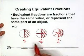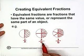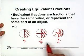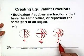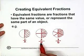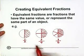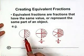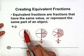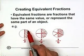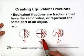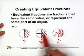So one half, two over four, and three over six — they are equivalent because they represent the same part of an object: half.